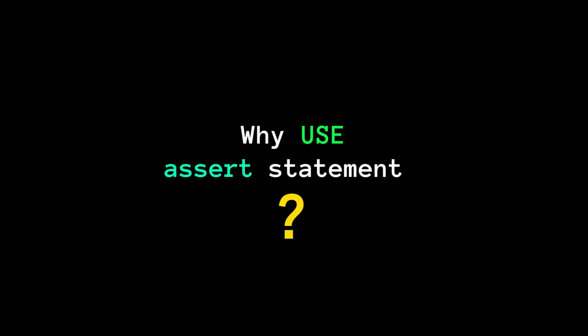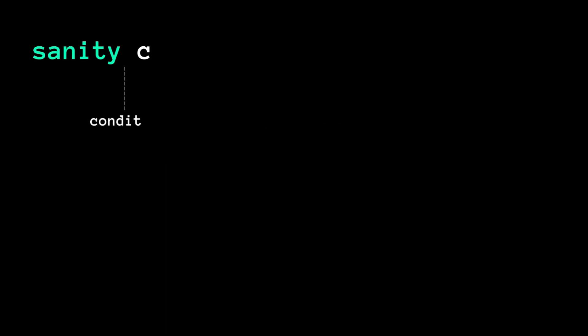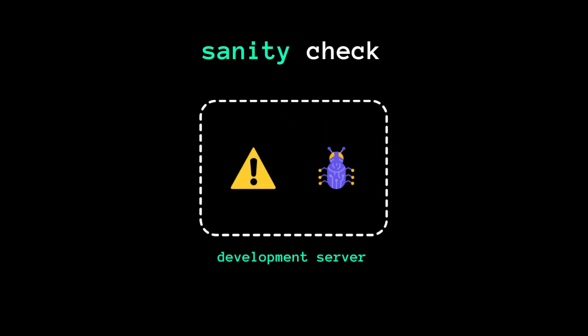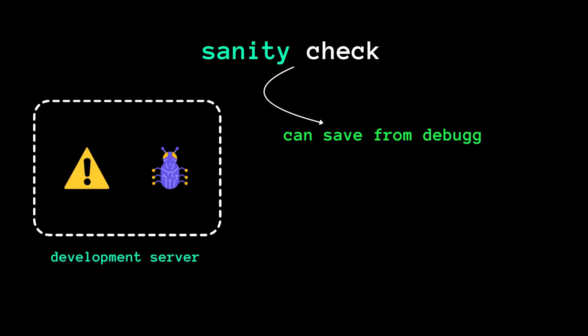So why do we use assert statements? The primary objective is to serve as a sanity check. They assist in identifying errors and bugs during the development process. This can save us hundreds of hours of troubleshooting later on.